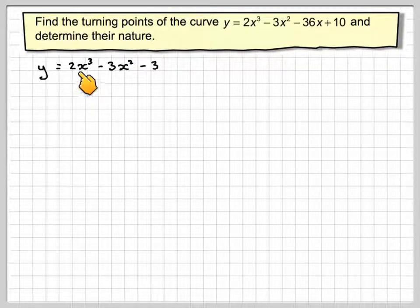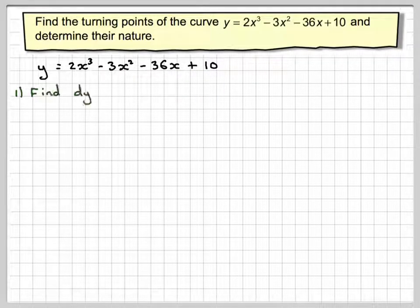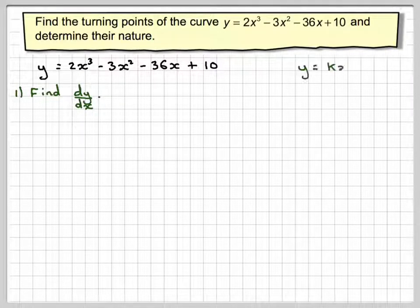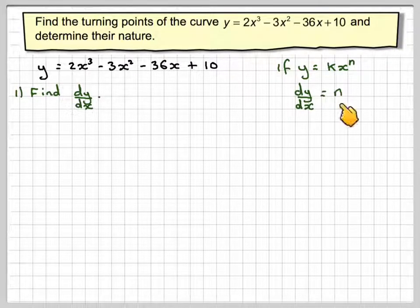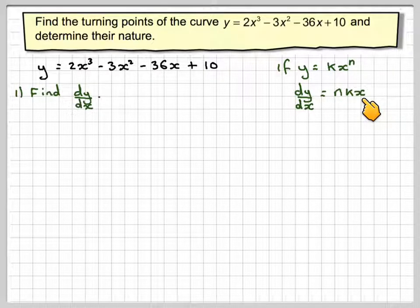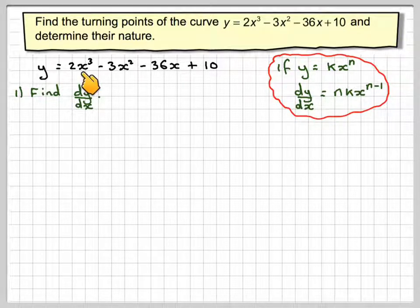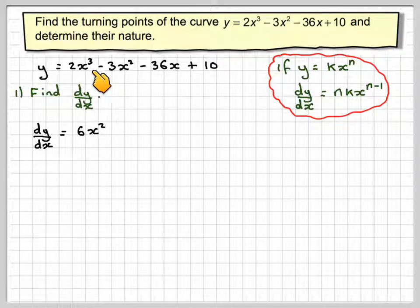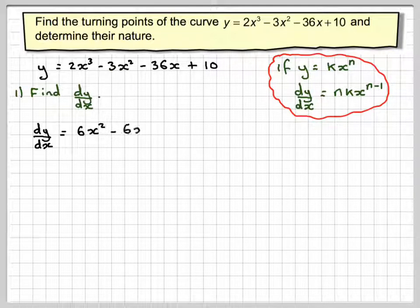So we've got y = 2x³ - 3x² - 36x + 10. Step 1 is to find dy/dx, the gradient function. We know that if y = kxⁿ, then differentiating means bringing the power down in front: n·kx, then reducing the power by 1. Applying this term by term: dy/dx = 3×2 = 6x², then 2×(-3) giving -6x.